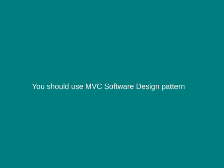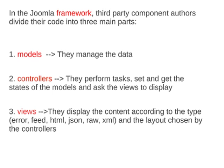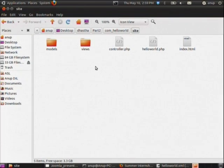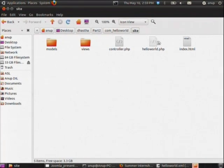We should use an MVC pattern. In the Joomla framework, third-party developers split their component into three parts: a model, controllers, and views — as already explained. Now I am going to add the MVC structure to our HelloWorld component. I have added a models folder, a views folder, and a controller.